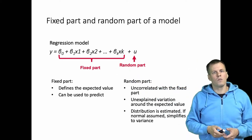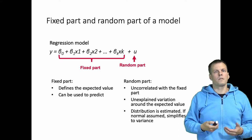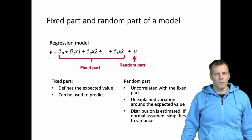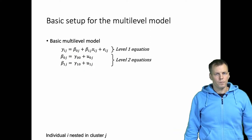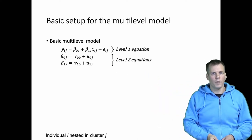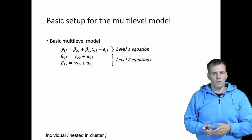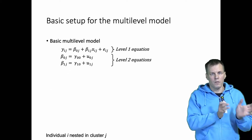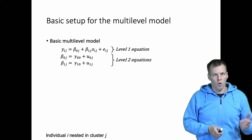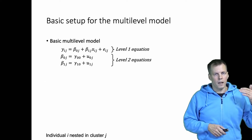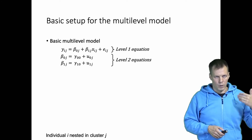Let's look at how this relates to multilevel modeling, because the difference really becomes relevant only when we add more levels to the data. Here is the basic setup for a multilevel model. We have these indices: i is an individual and j is a cluster. For example, i could be an observation and j a person if we have repeated observations of each person, or i could be a person and j a team, giving us individuals nested in teams, or i a company and j an industry. The level-one equation is a normal regression with a catch.